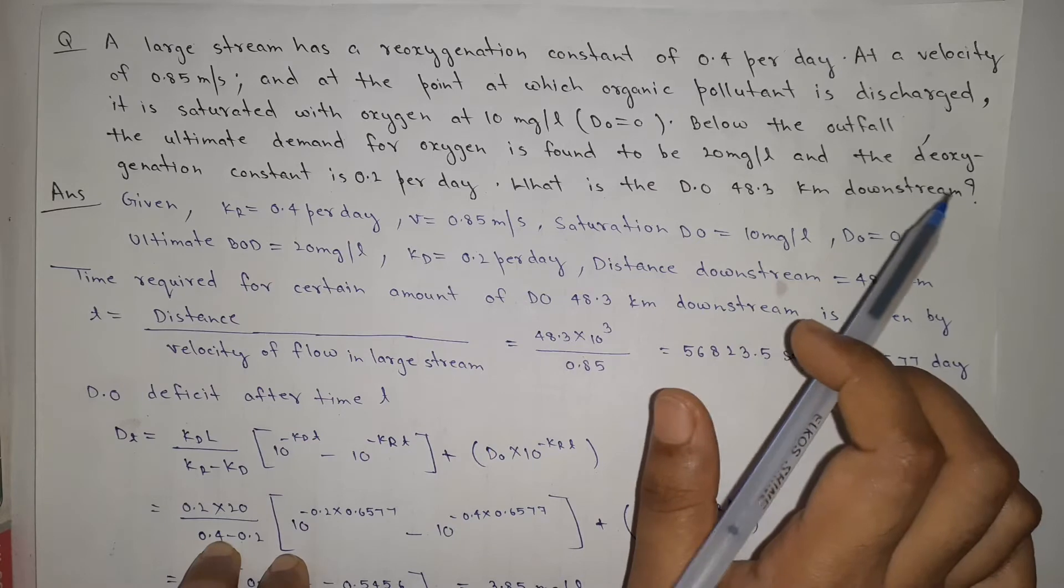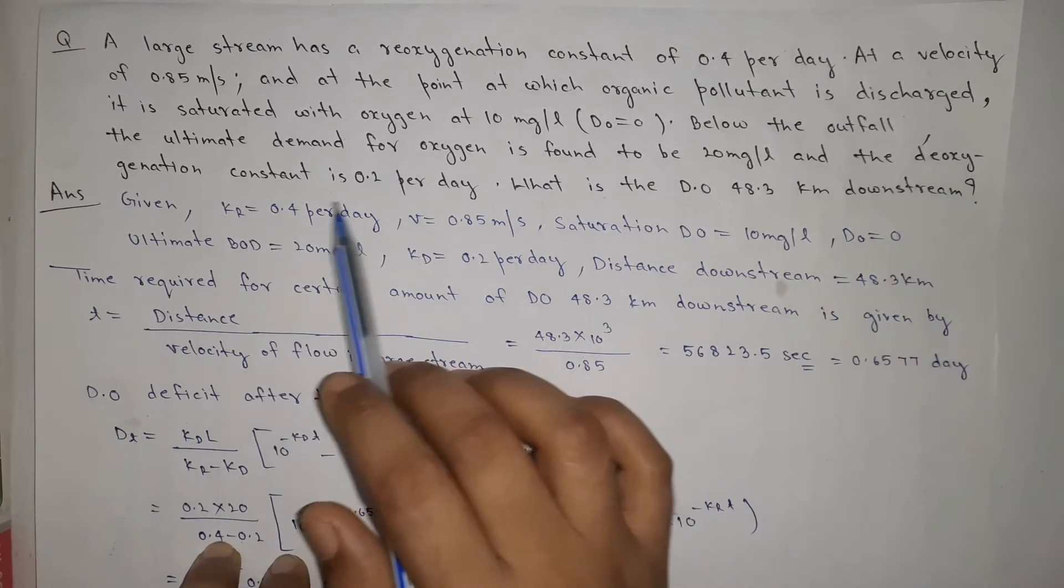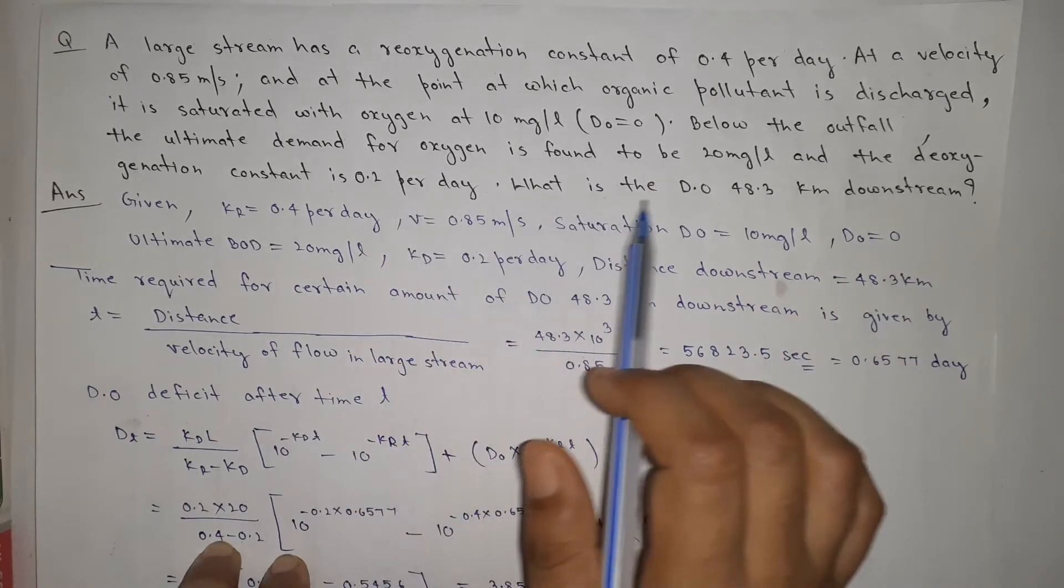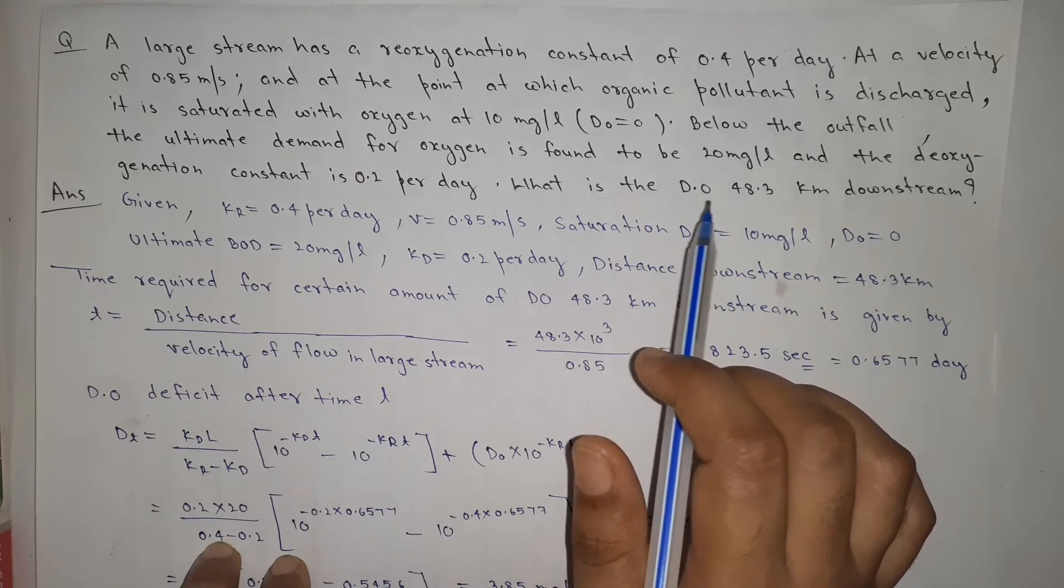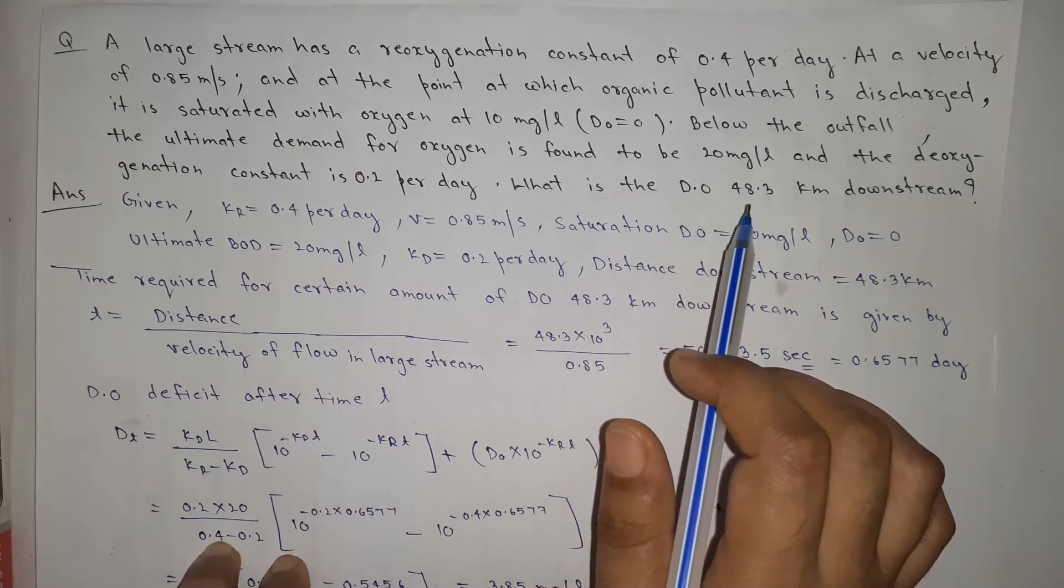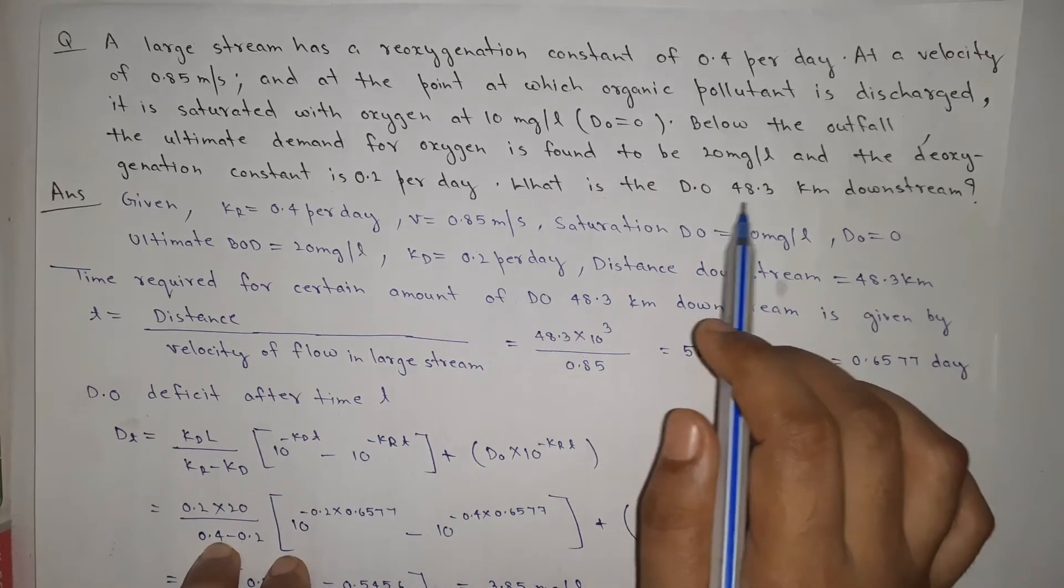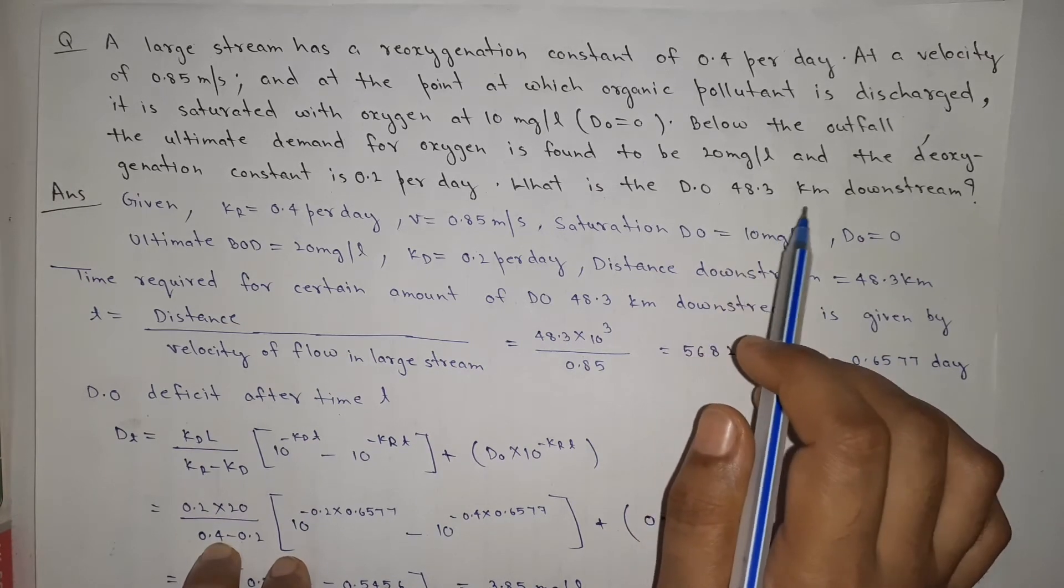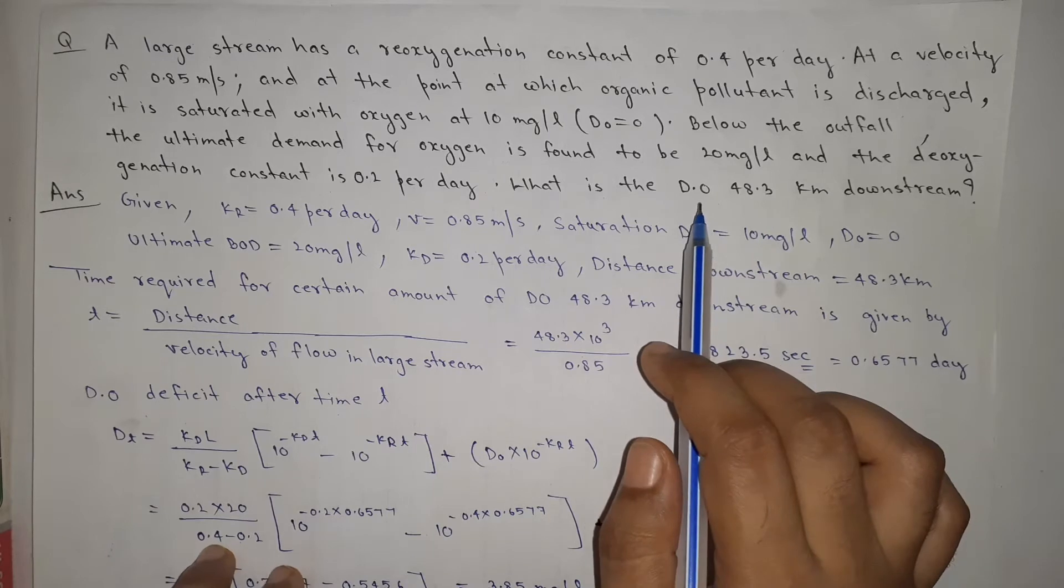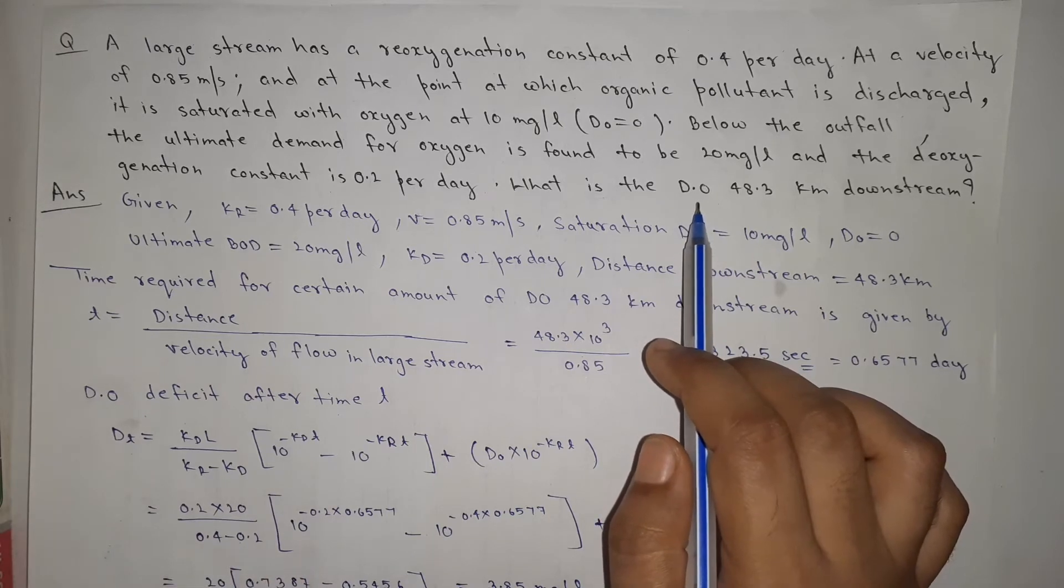What is the dissolved oxygen at 48.3 km downstream? At this 48.3 km distance, we have to find the dissolved oxygen.